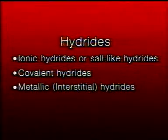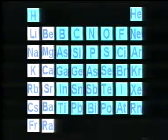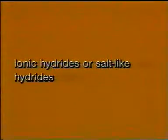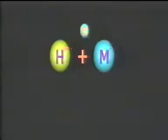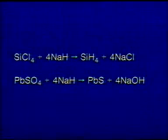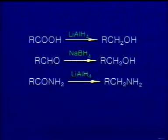Ionic hydrides, also called salt-like hydrides, covalent hydrides, and metallic or interstitial hydrides. We concentrate on hydrides of the typical elements, ignoring hydrides of D-block and F-block elements, which are known as the interstitial hydrides. Ionic hydrides are only formed with sufficiently electropositive elements such as Group 1 and Group 2 metals. These metal atoms can force a hydrogen atom to accept an electron, forming a hydride ion. These hydrides are used as reducing agents, and also to produce other important hydrides such as lithium aluminum hydride and sodium borohydride.